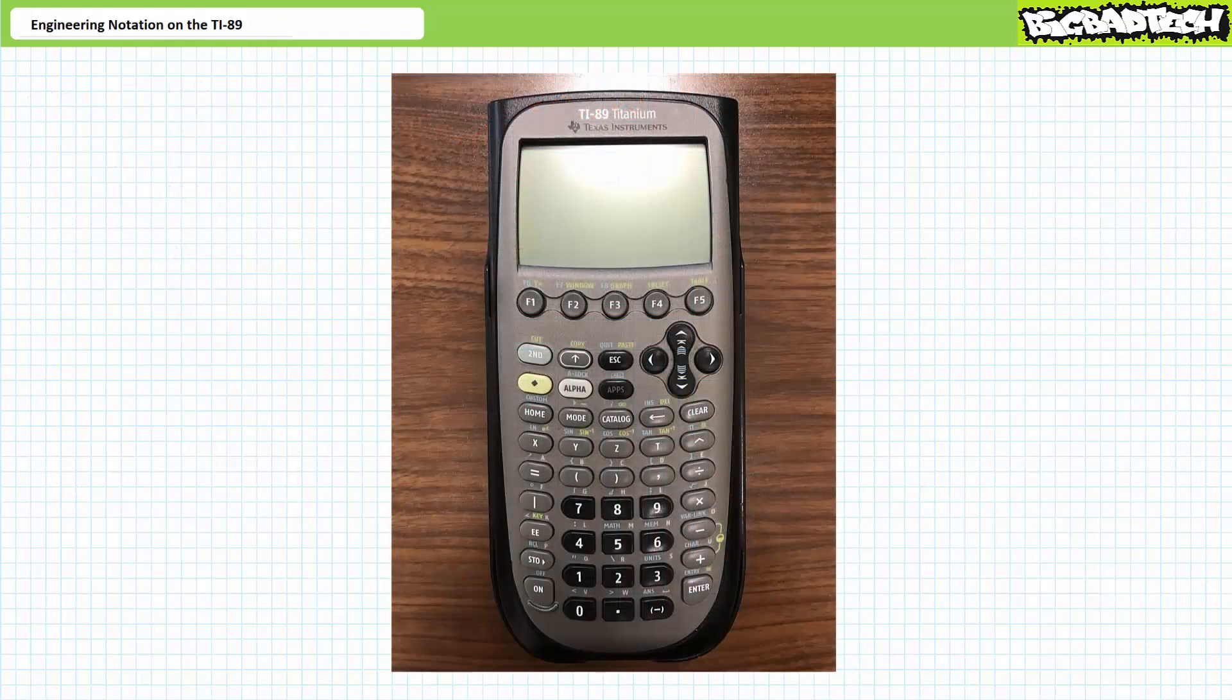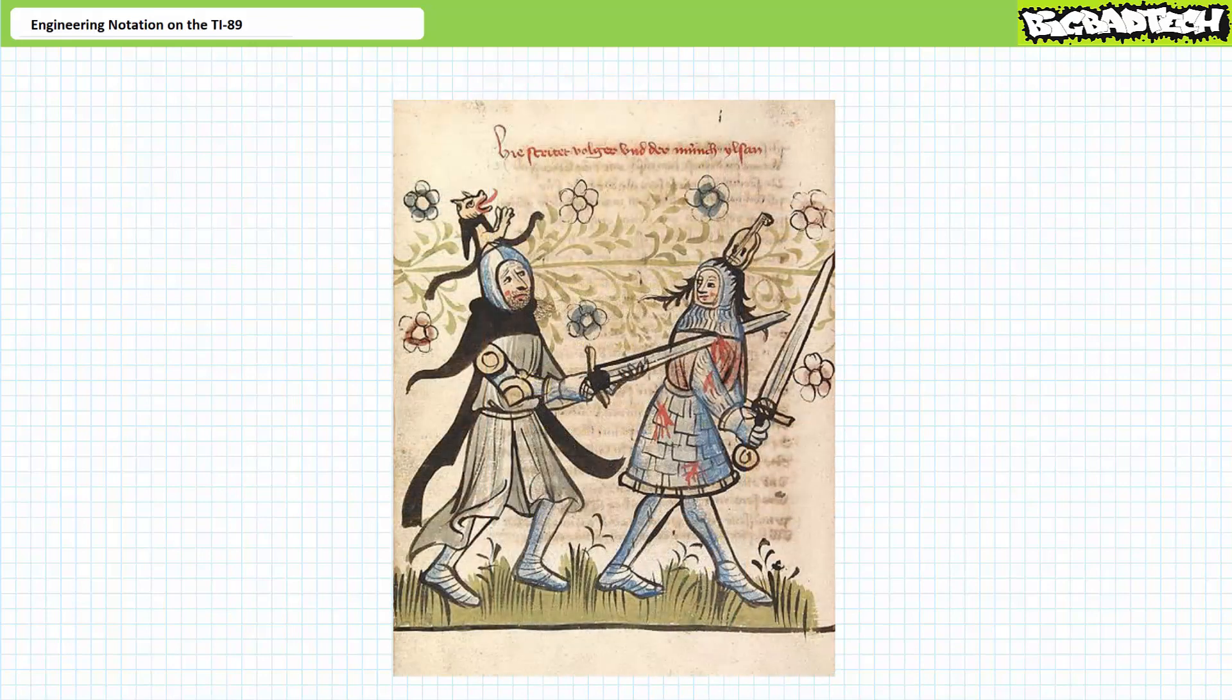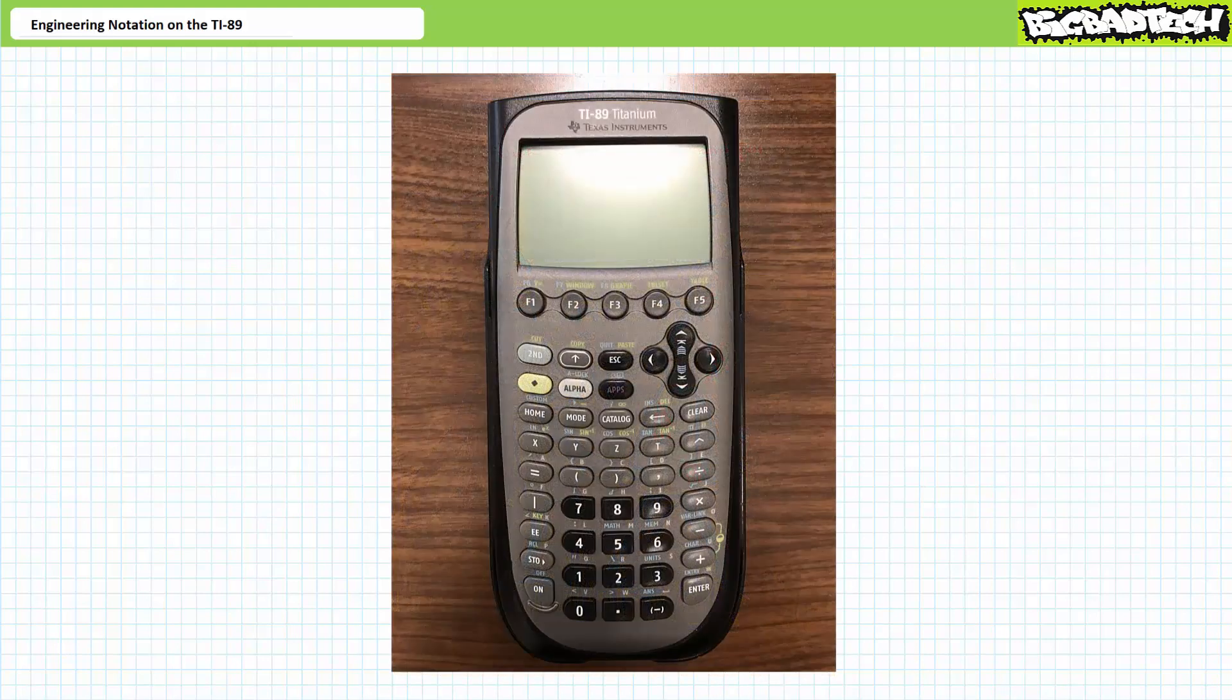Since this might be your first exposure to the TI-89, let's do a quick walkthrough. The TI-89 is the metaphorical sword with which you will fight many battles the next couple months and it will help you immeasurably if you know how to slash, stab and at the very least, differentiate between the blade and the grip before you rush into battle. This being said, the calculator is not a magic sword and it will not tell you what to do nor how to apply the concepts we've discussed.